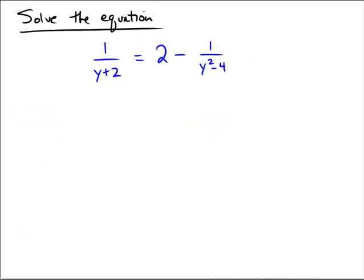Solving Rational Equations. The equation is: 1 over y plus 2 equals 2 minus 1 over y squared minus 4. Before starting, I'm going to erase that denominator of y squared minus 4 on the right and replace it with y plus 2 times y minus 2.